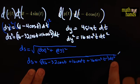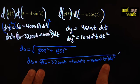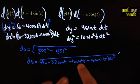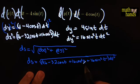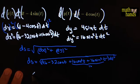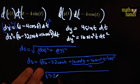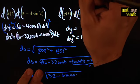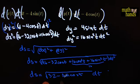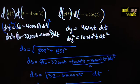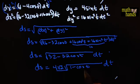Combining dx² + dy²: we get (16 − 32cos t + 16cos²t + 16sin²t) dt². Since sin²t + cos²t = 1, the 16cos²t + 16sin²t = 16. So the expression simplifies to (32 − 32cos t) dt². Pulling out the dt, ds = √(32 − 32cos t) dt = 4√2 · √(1 − cos t) dt.